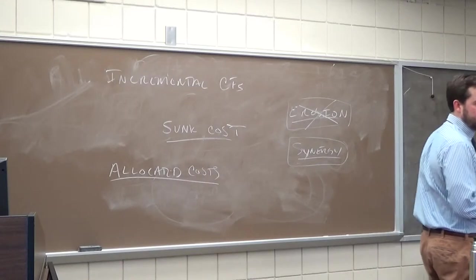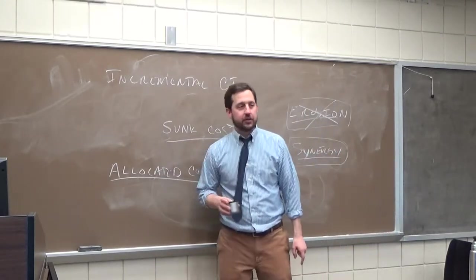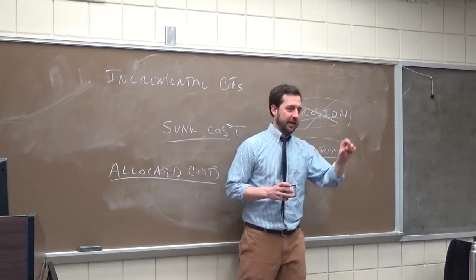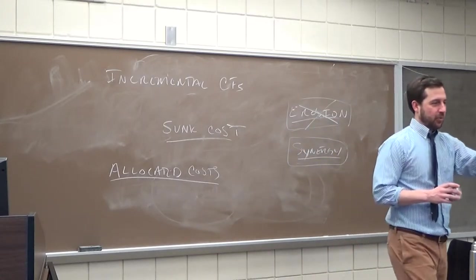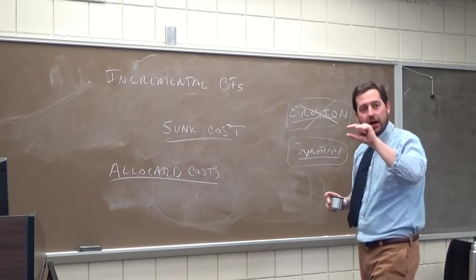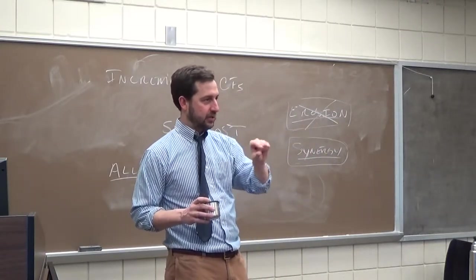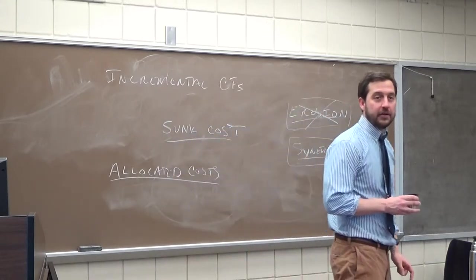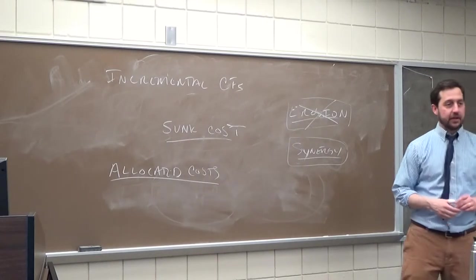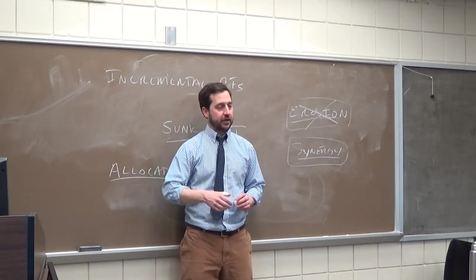Historically, from an accounting standpoint, you want to allocate costs across whoever is using the service — and that's fine as an accounting practice. But when we're deciding whether to build a factory or add a course, you don't want to allocate costs that aren't incremental, because you're going to pay them no matter what. As one student noted, it's kind of like a sunk cost — and that's a perfectly good way of thinking about it. You're going to pay it anyway, so don't allocate it to new projects you're evaluating.